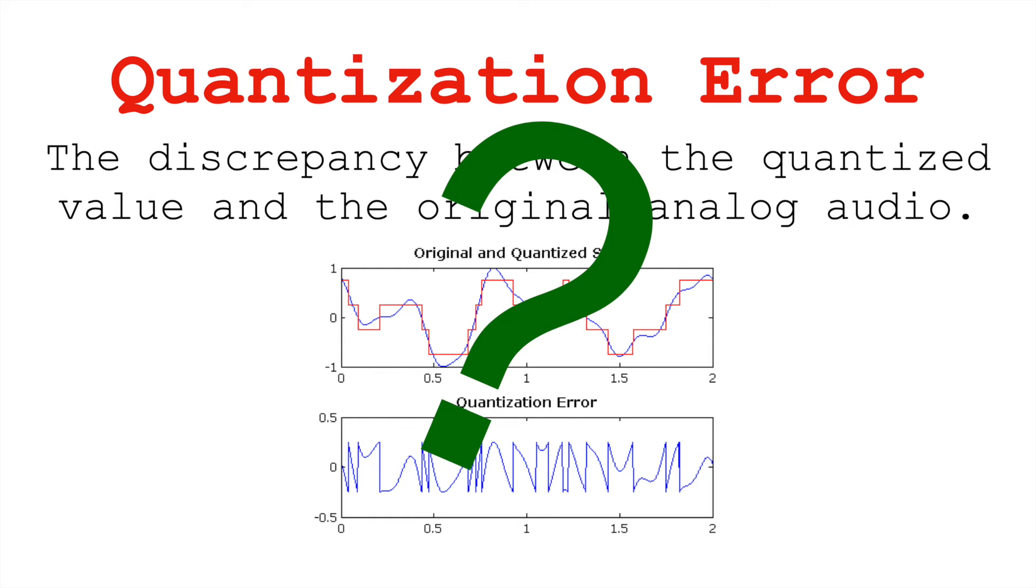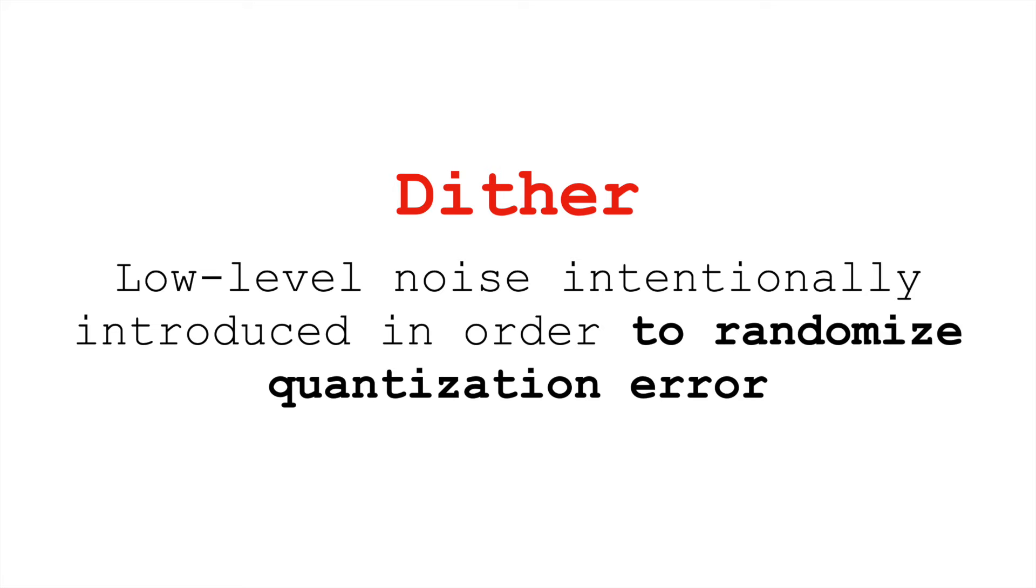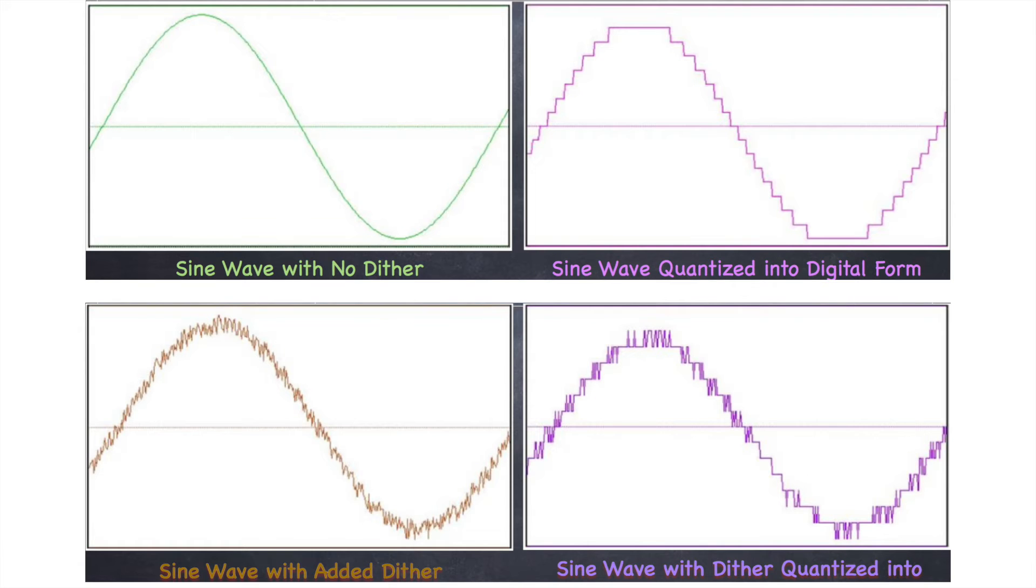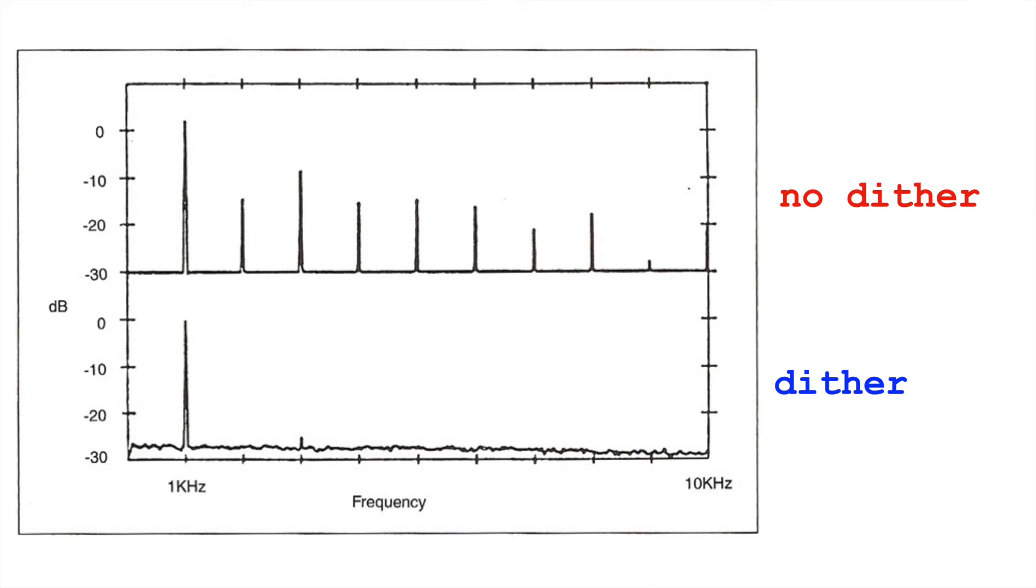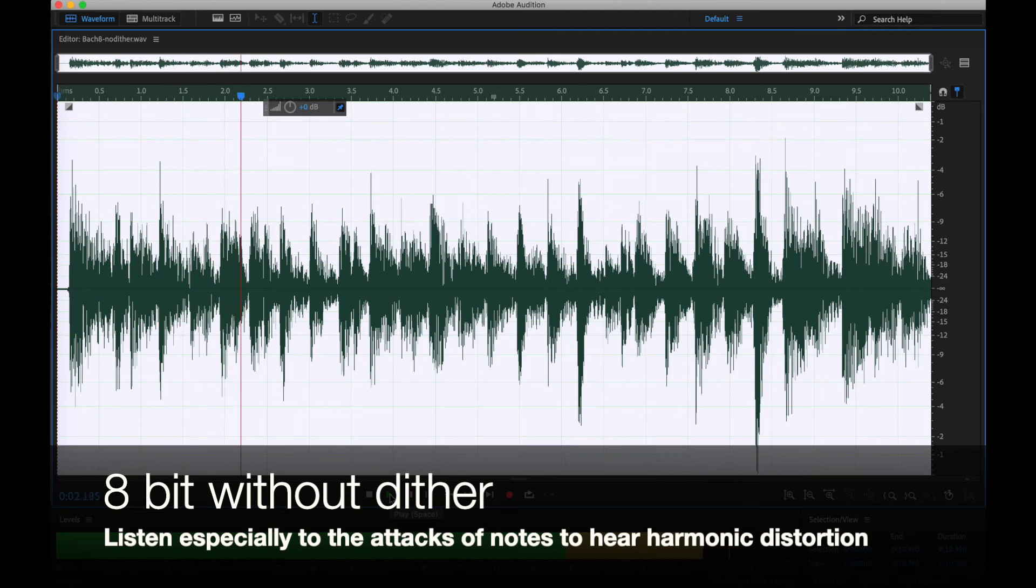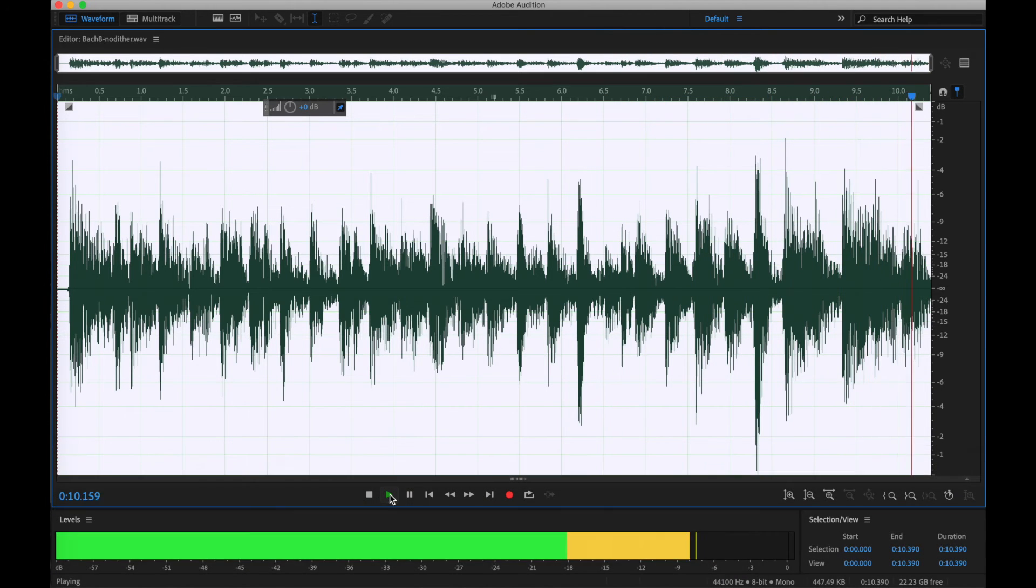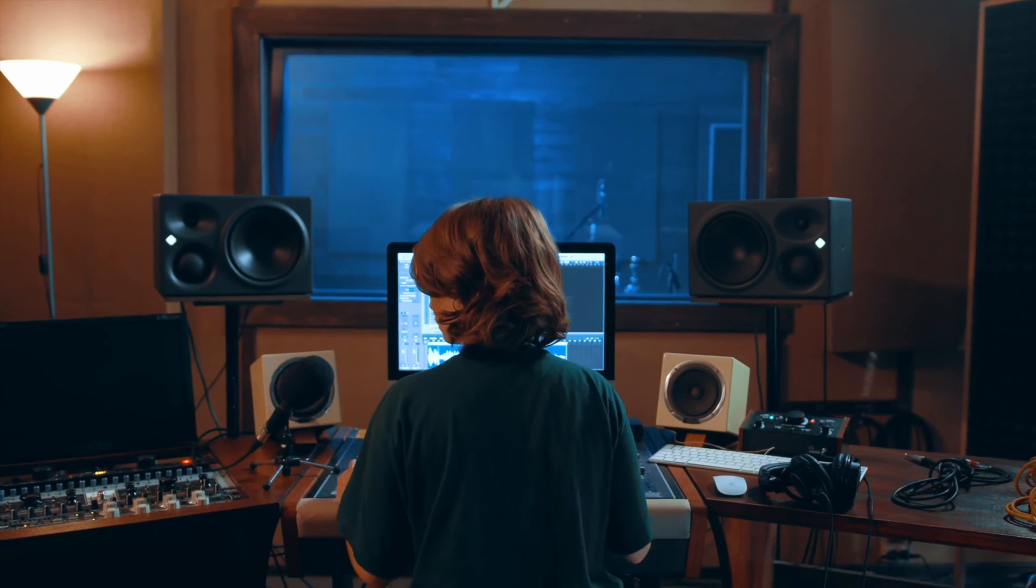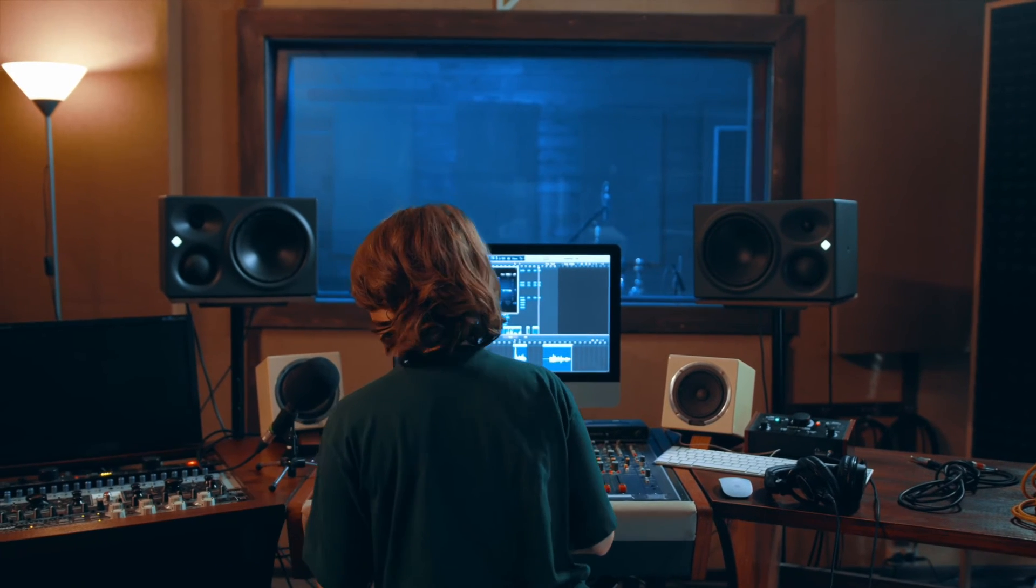So, what can we do about these errors? One thing we do is we intentionally introduce low-level noise into our recording in order to randomize that quantization error. This noise that we're introducing is called dither. While adding this noise, well, adds noise, it prevents those errors from forming patterns and taking on shapes that might introduce harmonic distortion. And so, again, dither alleviates harmonic distortion, but it'll add hiss.